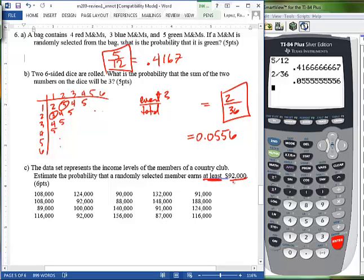So we want to get $92,000 and up. So we'll just count: one, two, this one doesn't make it, three, four, and $92,000 is included when they say at least.